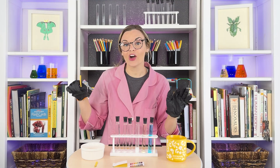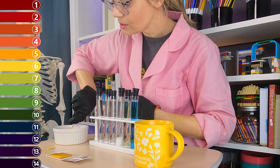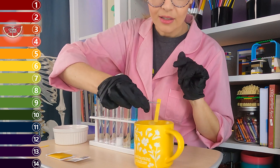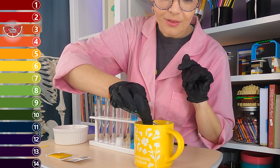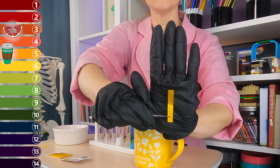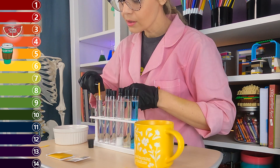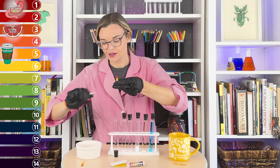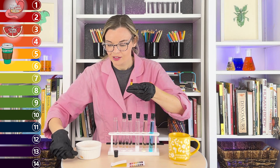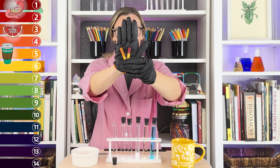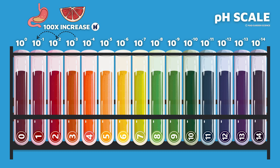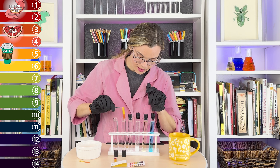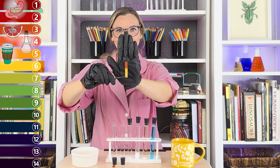Let's start out by testing our grapefruit. Grapefruit juice is a 3 on the pH scale. Now let's test my coffee — no milk. It looks to be between a 5 and a 6. This first test tube is filled with hydrochloric acid. Hydrochloric acid is at a 1 on the pH scale, and grapefruit juice is at a 3 — that means this hydrochloric acid is 100 times more acidic than the grapefruit juice.